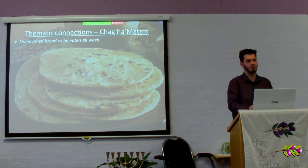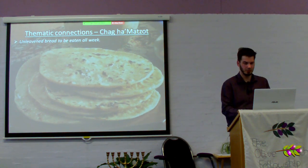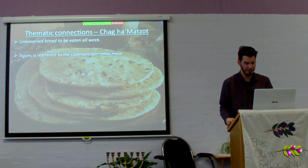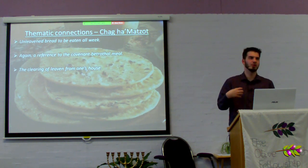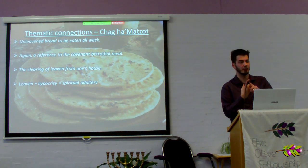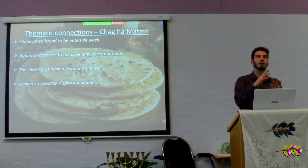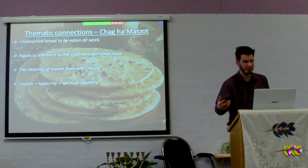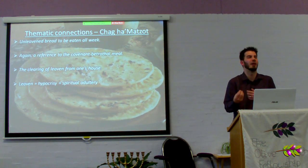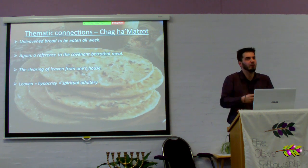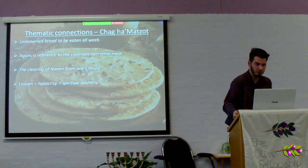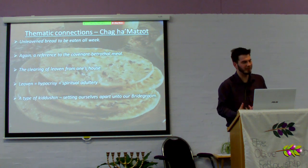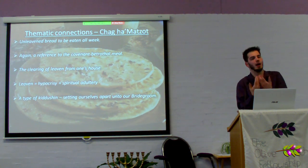Let's look at Unleavened Bread. Unleavened bread is to be eaten all week — again, a reference to the covenantal betrothal meal, with bread and wine. We have the clearing of leaven from one's house. Leaven is hypocrisy, which is spiritual adultery. In Luke, Yeshua says: 'Beware of the leaven of the Pharisees, which is hypocrisy.' The traditions of men, the traditions of false religion — these are all the things we need to be getting out, and all these are forms of spiritual adultery. This is part of setting yourself apart unto your groom — a type of kiddushim, the bride being sanctified unto her husband.